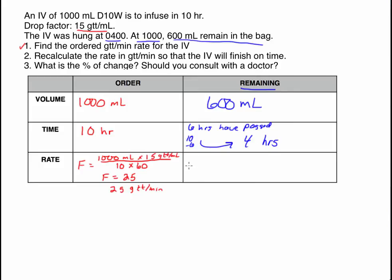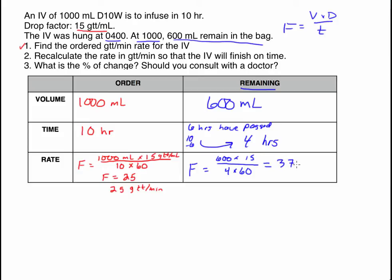We can find that flow rate using the formula. 600 milliliters to be infused, drop factor is 15. So 600 times 15 divided by 4 times 60 — that denominator is 240. Putting that in the calculator: 600 times 15 divided by 240 gives us exactly 37.5, which when rounded to the nearest whole number gives us 38 drops per minute.